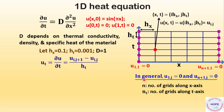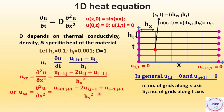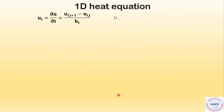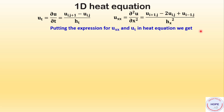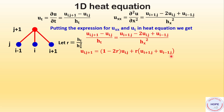u_t can be written using the forward difference formula. u_xx can be written either at time index j or at time index j+1. Let's first use u_xx at time j. Putting the expressions for u_xx and u_t into the heat equation and letting r equal h_t divided by h_x squared, we can calculate the value of u(i, j+1) from u(i, j), u(i+1, j), and u(i-1, j). This is the explicit method.